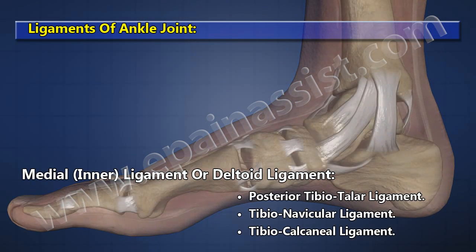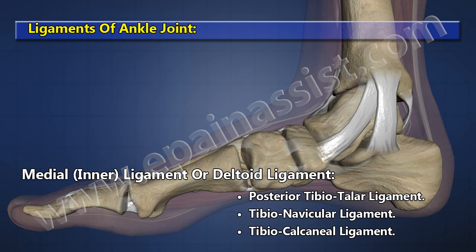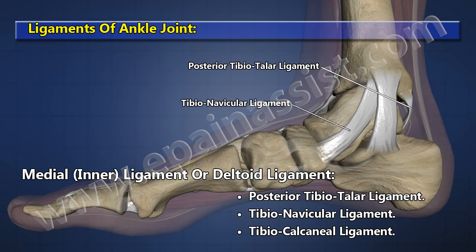The medial inner ligament, or deltoid ligament, consists of three ligaments: the posterior tibiotalar ligament, the tibionavicular ligament, and the tibiocalcaneal ligament.